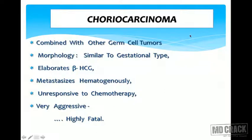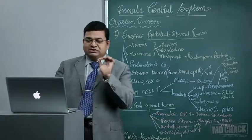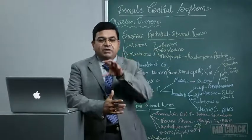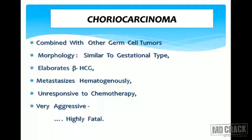Choriocarcinomas can occur combined with other germ cell tumors or rarely as a single tumor — mixed germ cell tumors are most common. They are similar to gestational choriocarcinoma and secrete large amounts of beta-hCG, which serves as a tumor marker and for follow-up. Choriocarcinoma spreads hematogenously to the lungs — chest X-ray should be taken immediately to look for cannonball metastases. Chemotherapy response for the ovarian type is poor compared to gestational type; these are highly aggressive, fatal tumors.